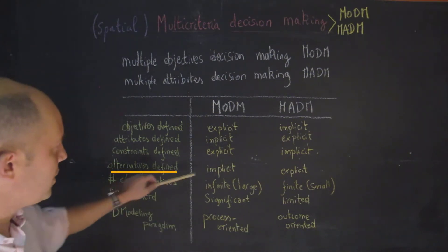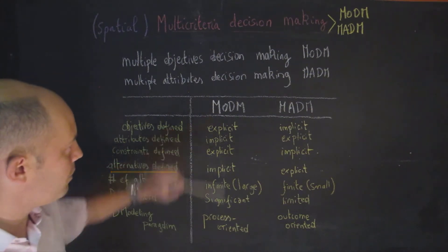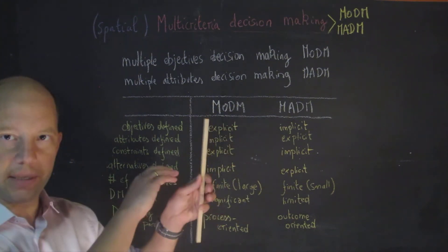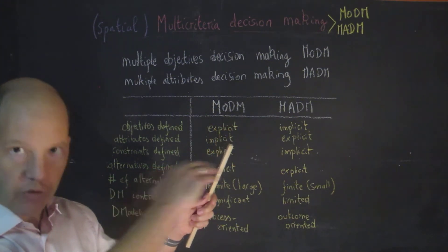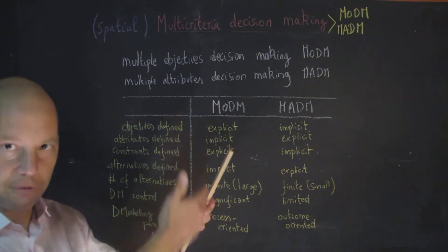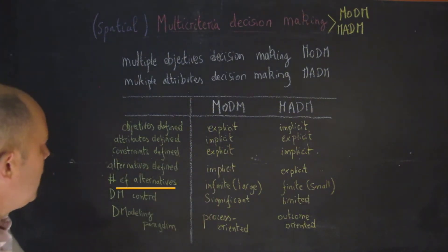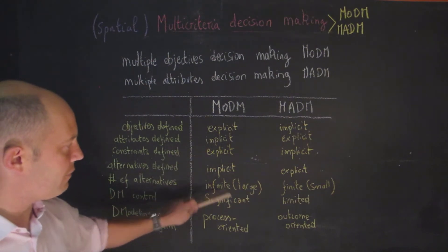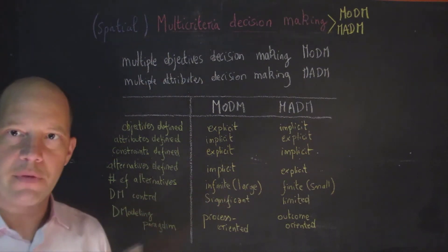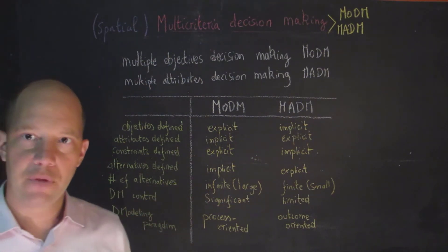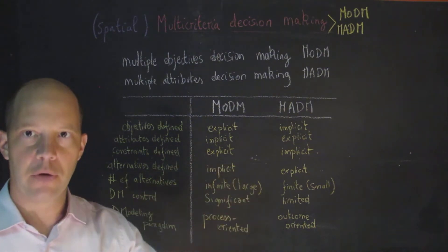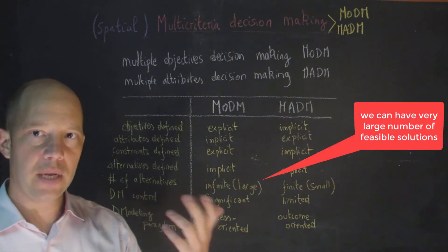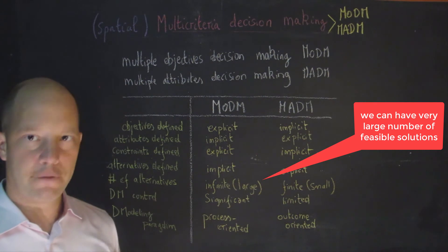In terms of alternatives, those are implicit for multiple objective and explicit for multiple attributes. As we have seen, we had different attributes and different alternatives. The number of alternatives for multiple objective problems is infinite — very large. As you know from exercises with the p-median, maximum covering location problem, and dispersion models, we can have a really large number of feasible solutions.